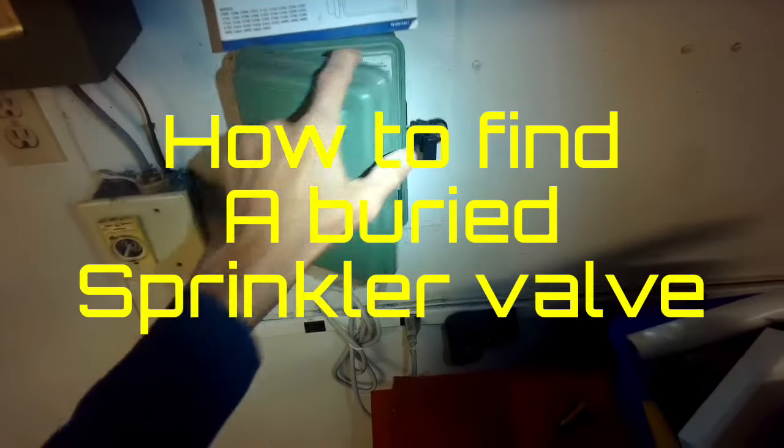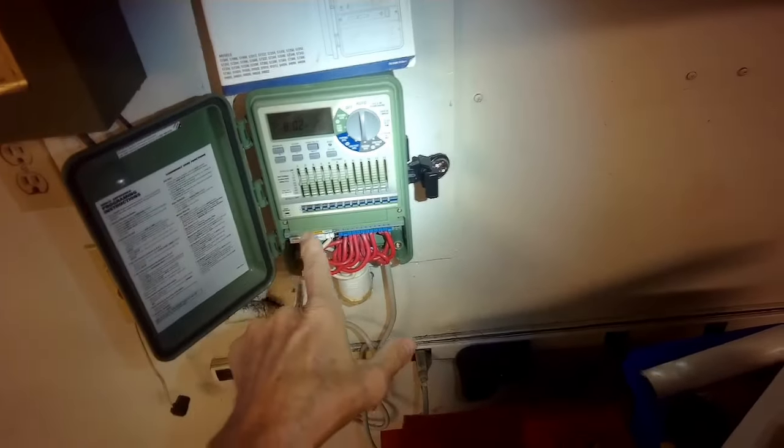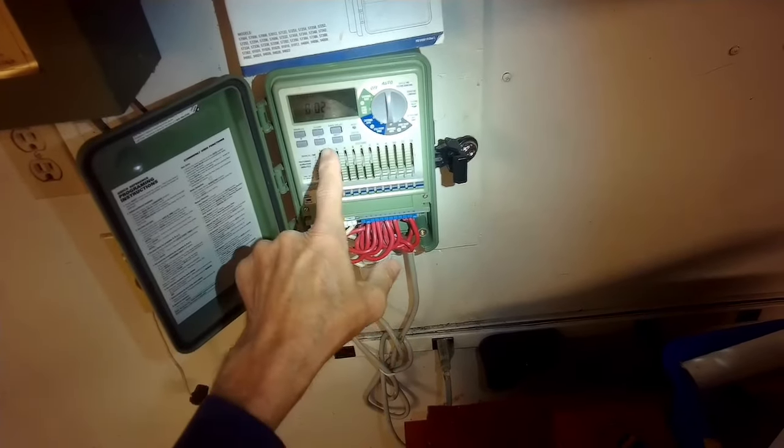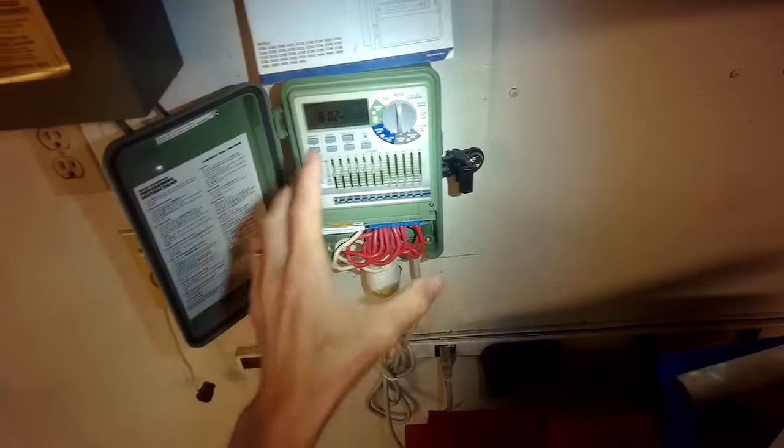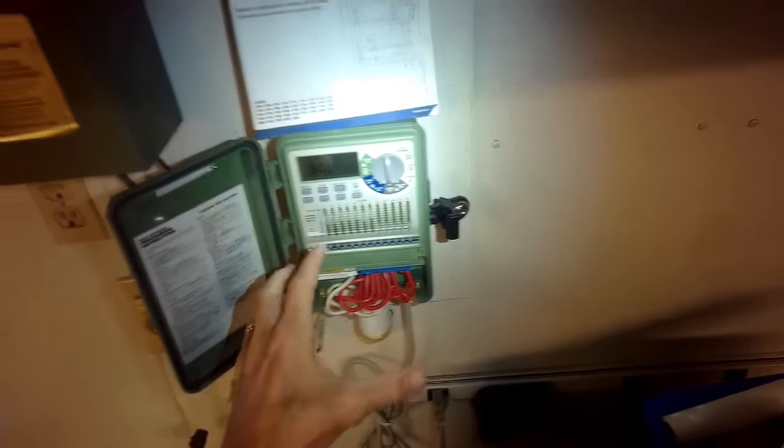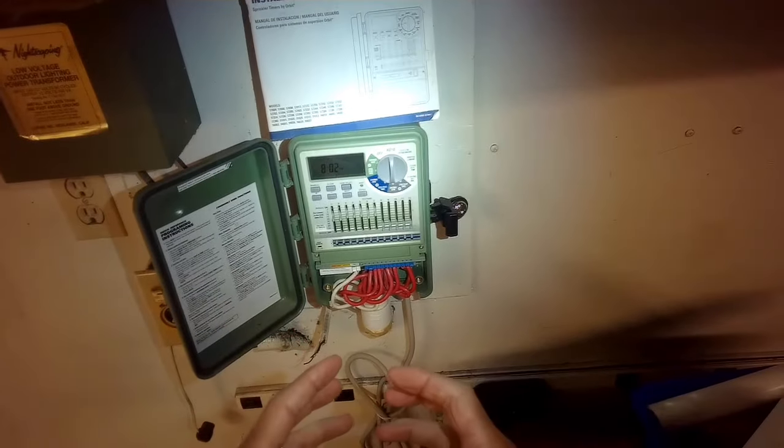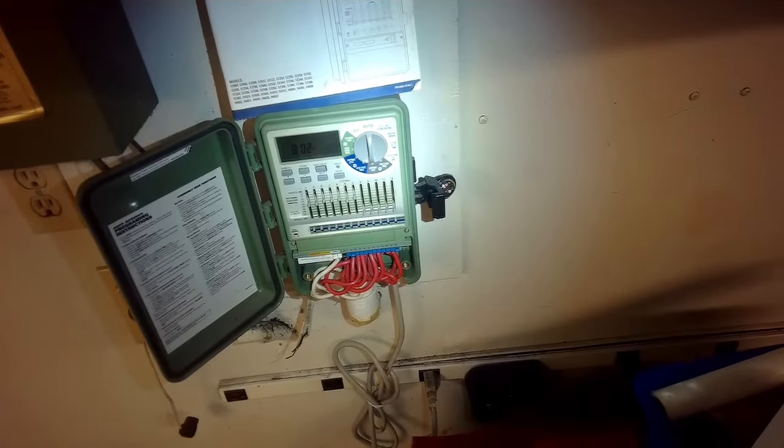I'm having trouble finding one of the sprinkler valves. Controller number two is intermittent - sometimes when I turn it on it works and sometimes it doesn't. So I'm trying to find the valve box itself to check it out.